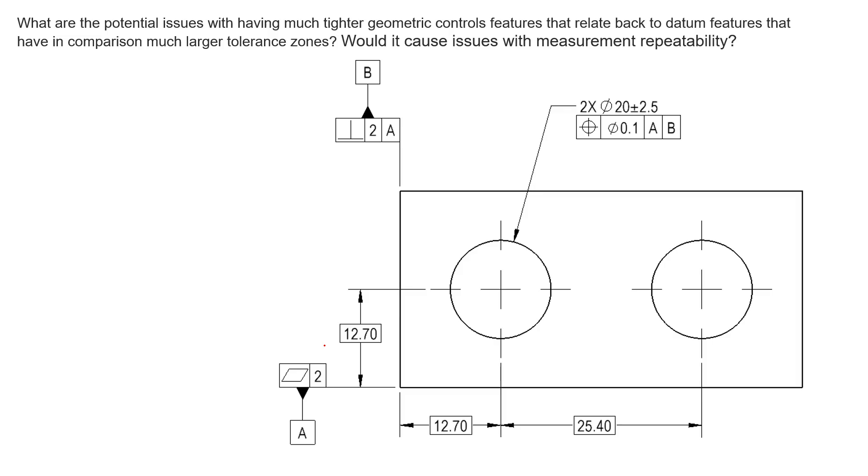Let's take a look at the example here outlined by the question. We see that we have a tight position tolerance on the location of these two holes, tight in relativity to maybe a loose form control on the datum feature. We see we have a loose two millimeter form control and a loose two millimeter orientation control on both datum features that are trying to locate where these holes are. So the question is: what are the effects, positive or negative, of having large tolerance values here and small tolerance values here?